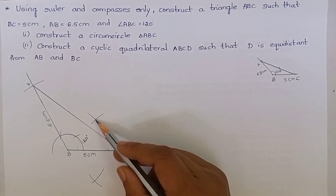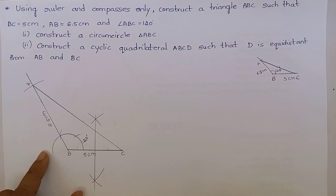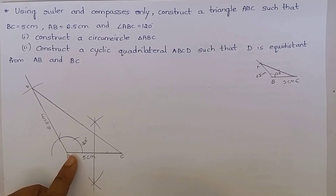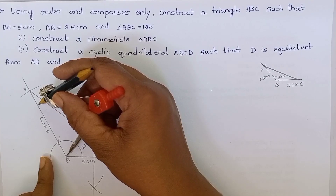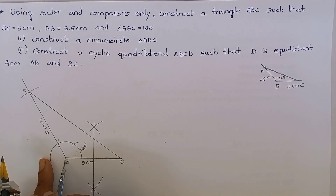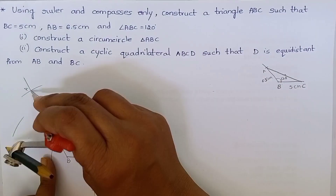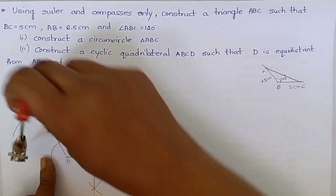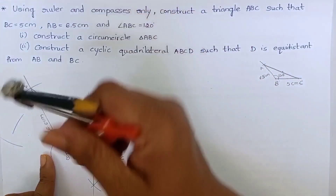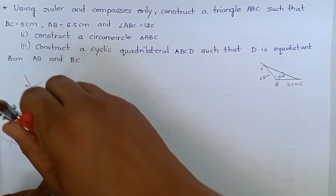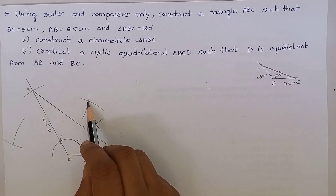Keep the compass at point C and draw an arc. These two arcs meet at these two points — join this. Now let's take the perpendicular bisector of AB. To take the perpendicular bisector of AB, take more than half of AB. Keep the compass at point B and draw an arc, then keep the compass at point A and draw an arc. These two arcs meet at these two points — join this.